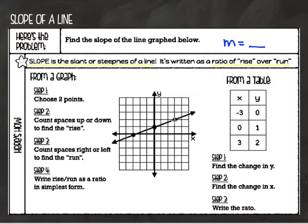Moving from this point to this point, the first thing I want to do is count the spaces up or down to find the rise — how far straight up do I have to go to land on this point. I'm going to have to go up two spaces, so my rise is two. From there, I'm going to head over to the right until I land on that point, and when I count those spaces I get six. So six is my run.